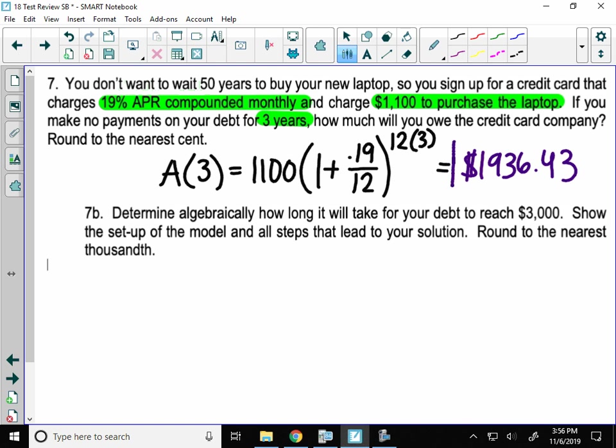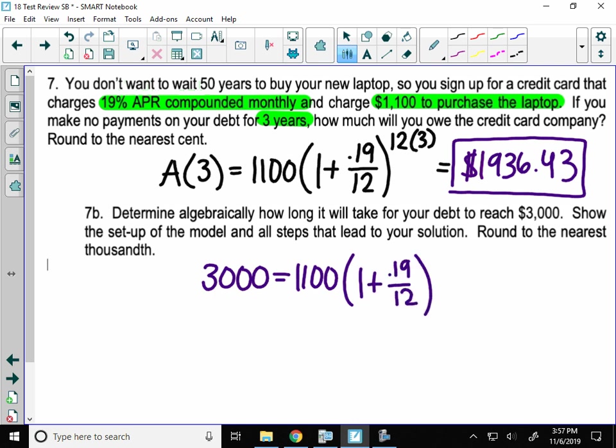So that's what you'll owe in 3 years if you don't pay off your credit card. Now, suppose you still don't pay off your credit card because for some reason you just haven't gotten a job and can't figure out your finances. How long until you have reached a debt of $3,000? So that's what's going to go in here for the amount. $3,000 is what we want to know how long it takes to get to. The rest of it is still the same. You still start with $1,100. Although this time I'm leaving T, just like last time, in the exponent because I'm trying to find the time.